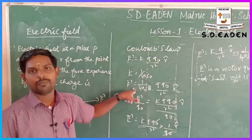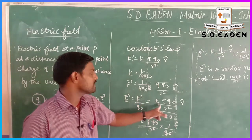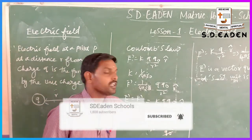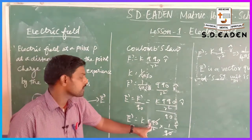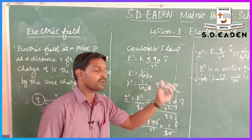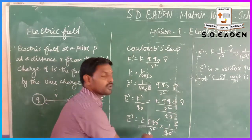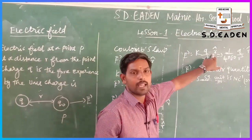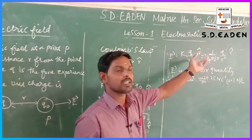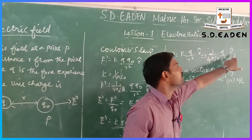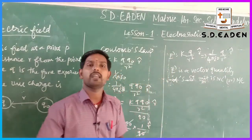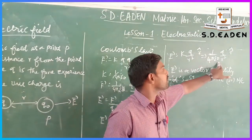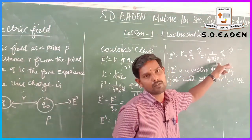To derive the electric field expression, substitute the F vector equation: F vector = k·q·q0 / r² · r̂. Dividing by q0, the q0 terms cancel, giving: E vector = k·q / r² · r̂. Substituting k = 1 / (4πε), the final expression is: E vector = (1 / 4πε) · q / r² · r̂. This is the important equation for electric field due to a point charge.